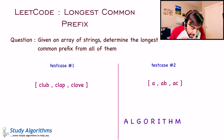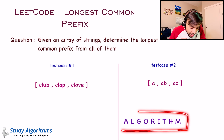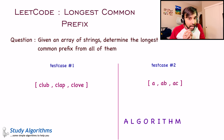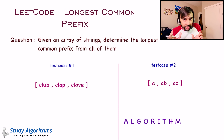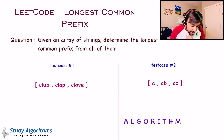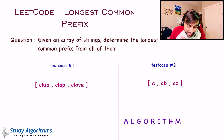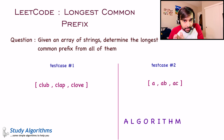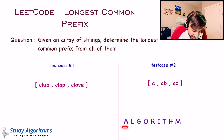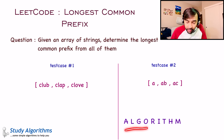If you are given a word, let us say the word 'algorithm'. This string would have two parts: a prefix and a suffix. Any word or any sequence of letters that starts from the beginning is a prefix, and any sequence of letters towards the end are called a suffix. For this word 'algorithm', you can say that AL is a prefix, or ALG is a prefix.